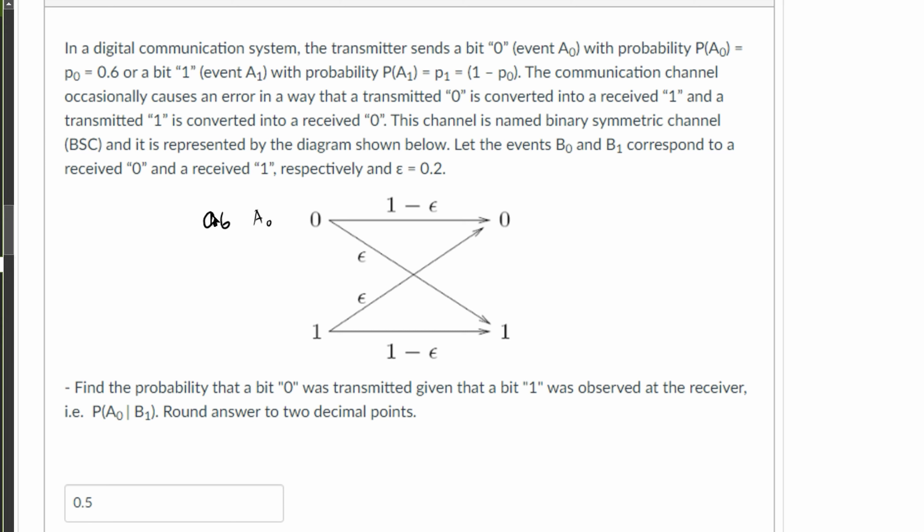Or a bit 1, event A1, equal to 1 minus P0, which is 0.4. The communication channel occasionally causes an error in a way that a transmitted 0 is converted into a 1, and a transmitted 1 is converted into a 0. We can see that from here.